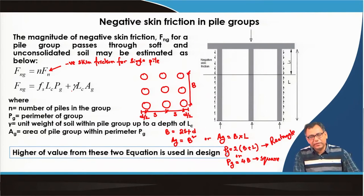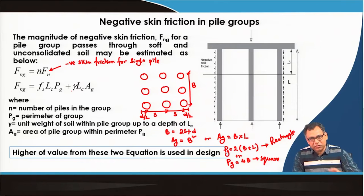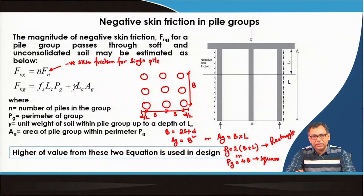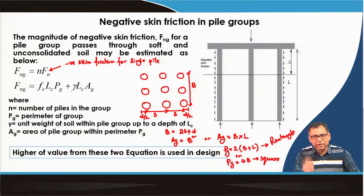We take the maximum of these two values as the negative skin friction for the group during design. This is unlike load carrying capacity where we take the minimum — here, since negative skin friction has a negative effect, we take the maximum. First we go for the single pile, then for the group pile.